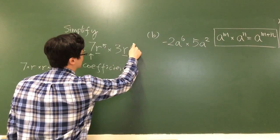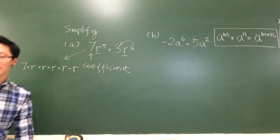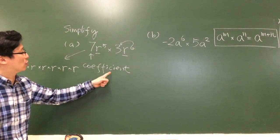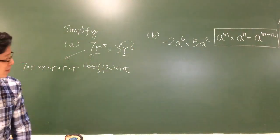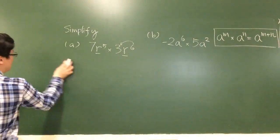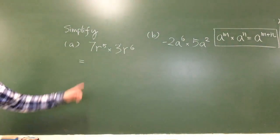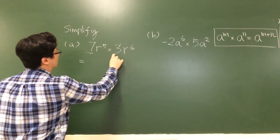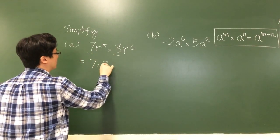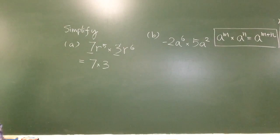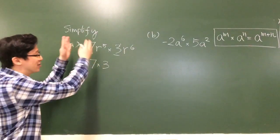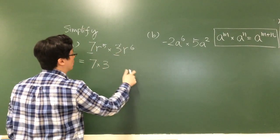Similarly, this power of 6, the number 6 does not affect the coefficient number 3. We can handle that separately. Therefore, 7 times 3, we can multiply them together because they are just coefficients. We can separate them from the variables.